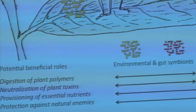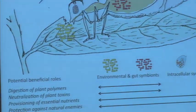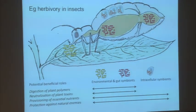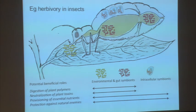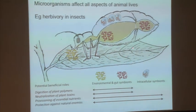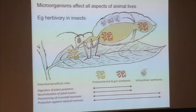For example, if you take an herbivorous insect, there are all kinds of microbes living in different positions with respect to the insect that may be associated with it for a long or short time. Intracellular symbionts that live inside cells — those are the ones I'm going to focus on today. They're living inside the cytosol of specialized insect cells; they're not in the gut.